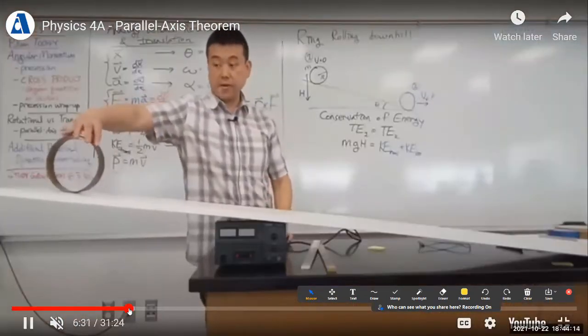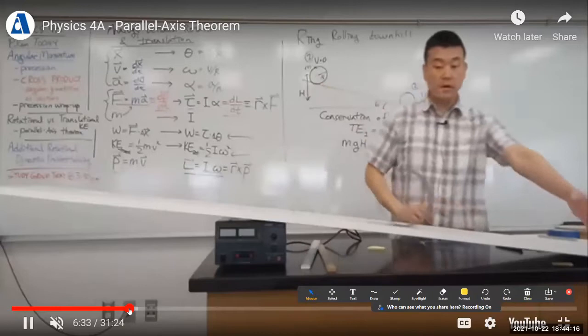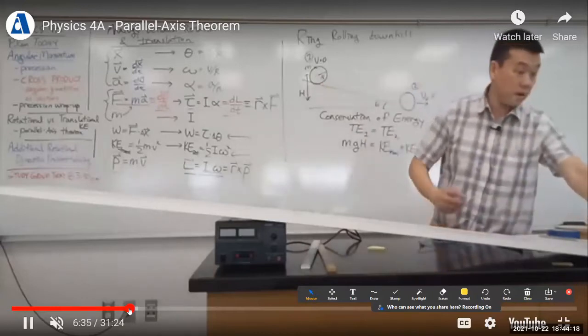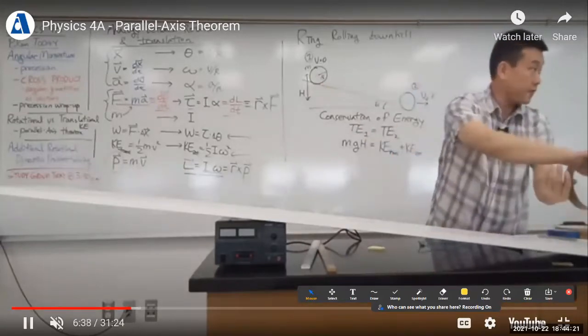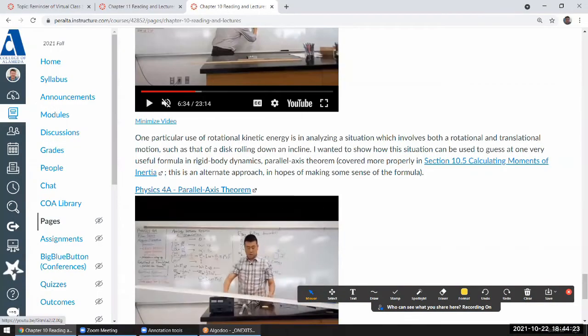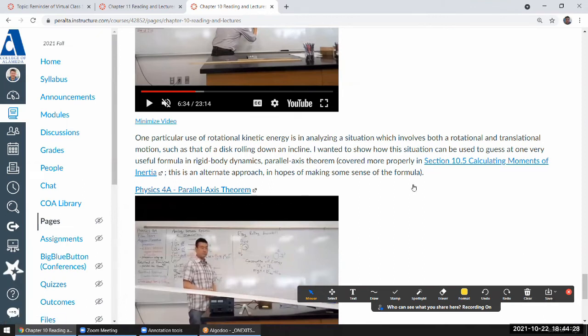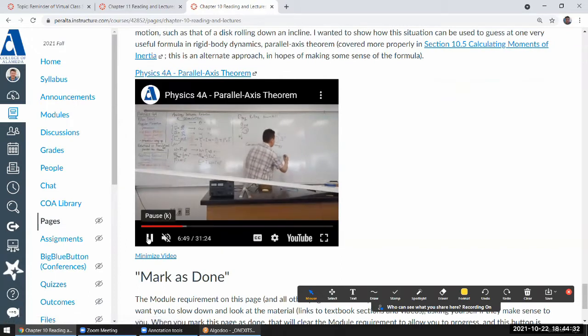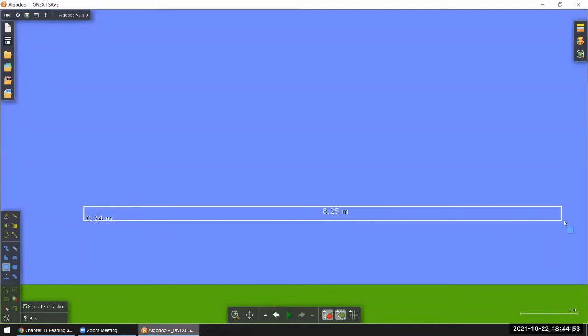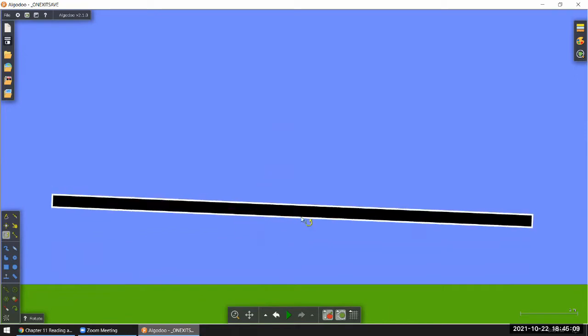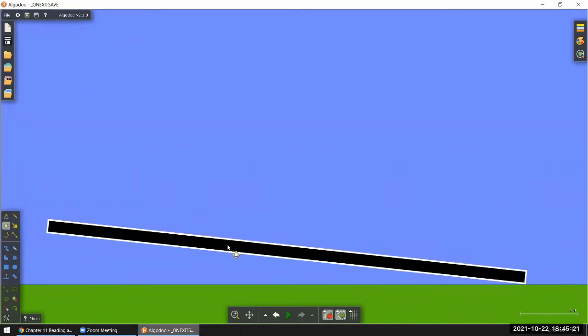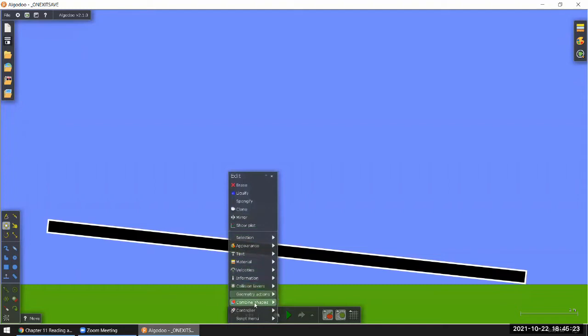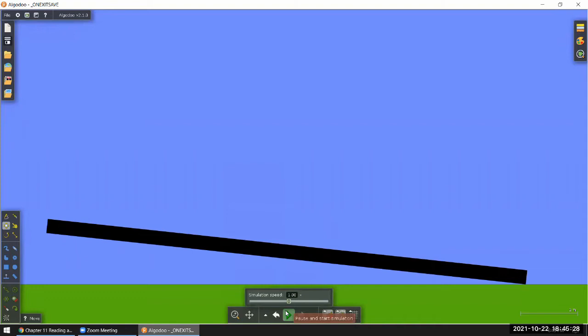Let me set up something that looks like this and then talk through the things about rolling without slipping that we need to cover. It would look something like this. I'm actually going to glue this to the ground so that it doesn't move when the simulation runs.